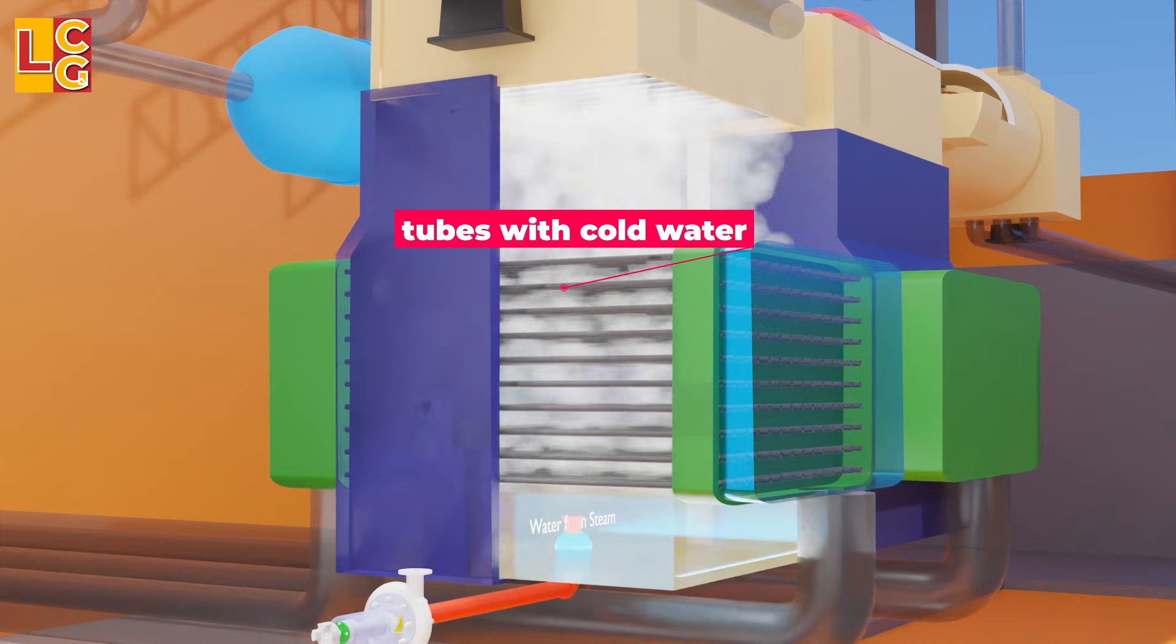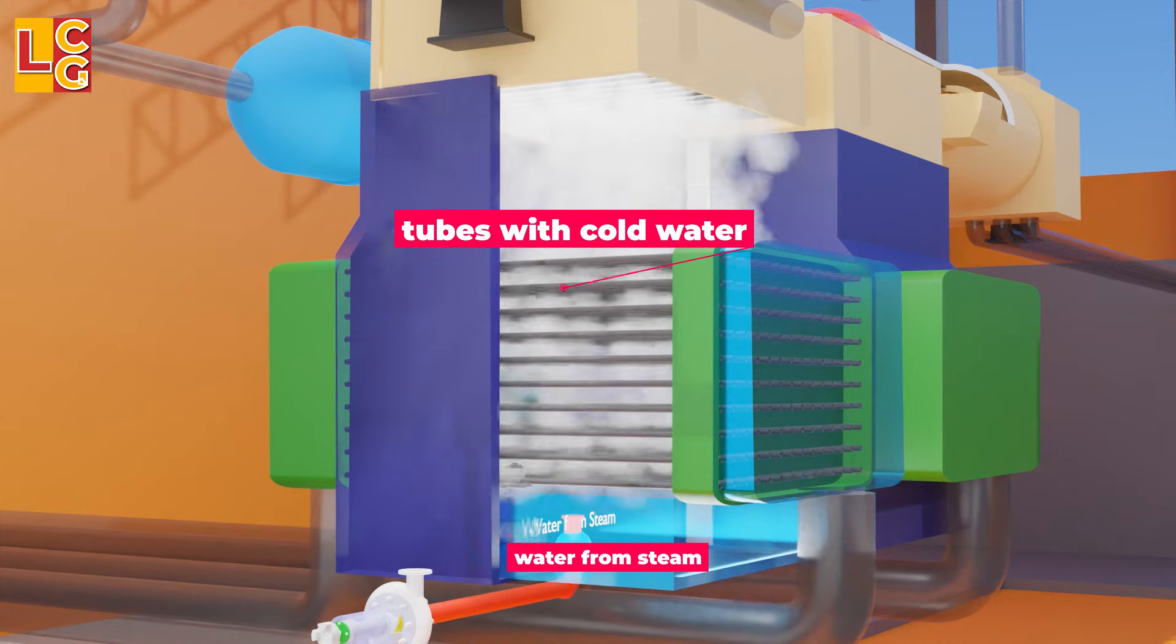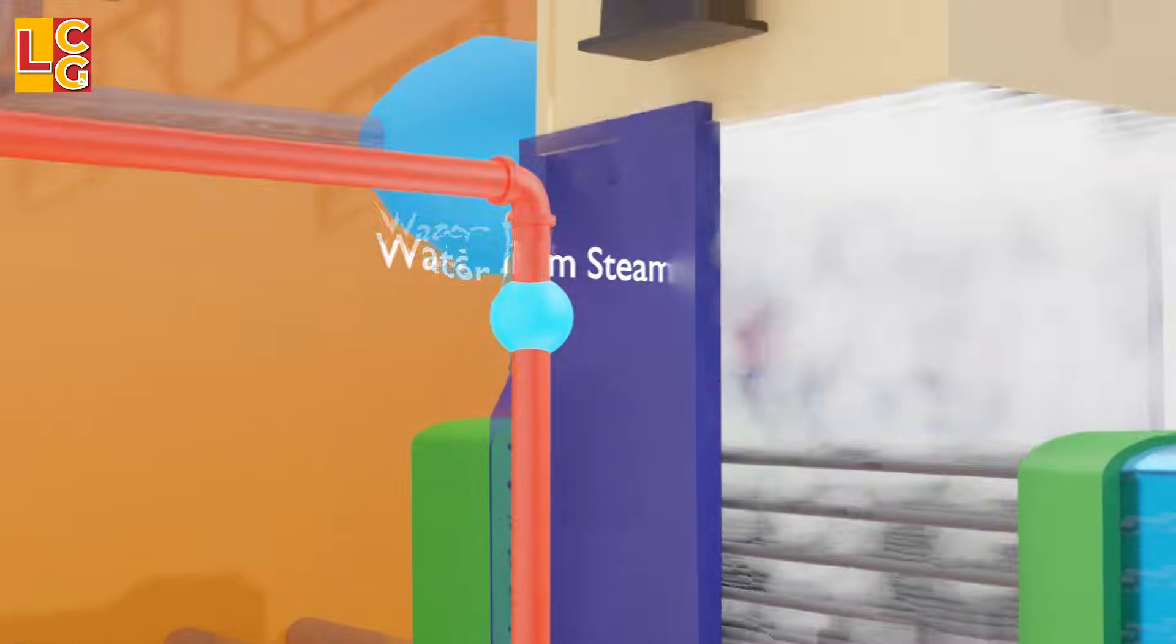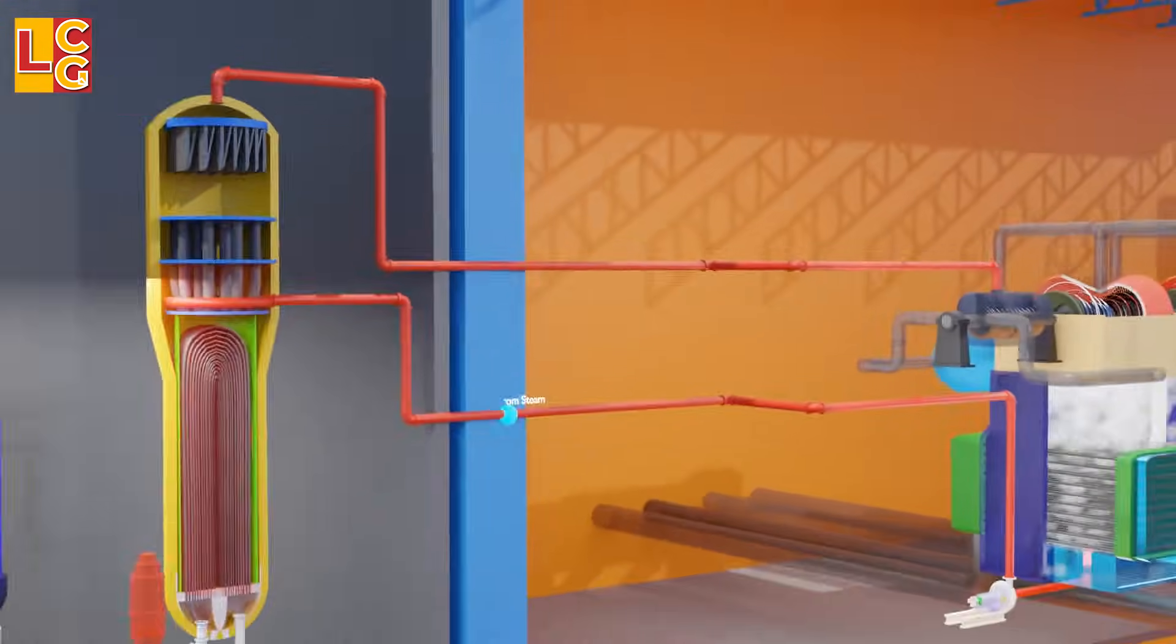Once steam is cooled down, they turn back into water and get collected at the bottom. After this, the water is pumped out of the condenser to be used by the steam generator again to do its job.